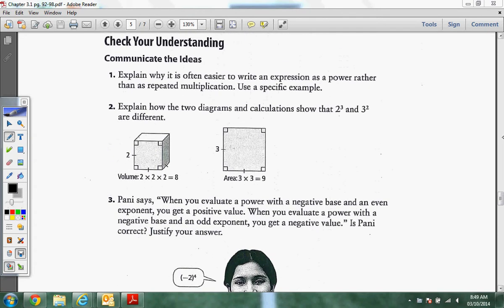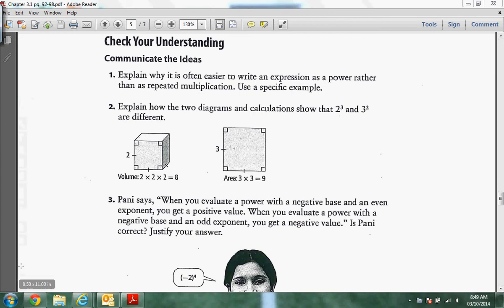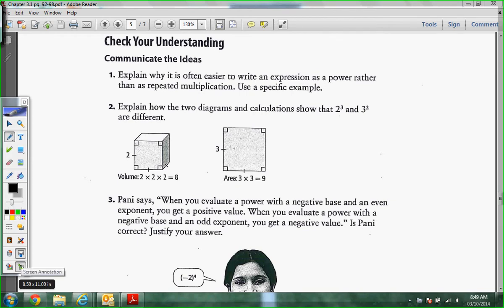We just went through all those. Now we're checking our understanding. So, it's kind of the start to your assignment. Explain why it is often easier to write an expression as a power rather than a repeated multiplication. So, what makes it easier to write as a power than a repeated multiplication? Yeah. It takes up much less space. It's just smaller, right? If I said, Nick, I want you to put three to the eleventh. Well, we're going to do three to the eleventh. Holy moly, right? You know, it's much easier to go just three to the eleventh as a power. That's kind of why we have them. Exponents kind of help us with that.